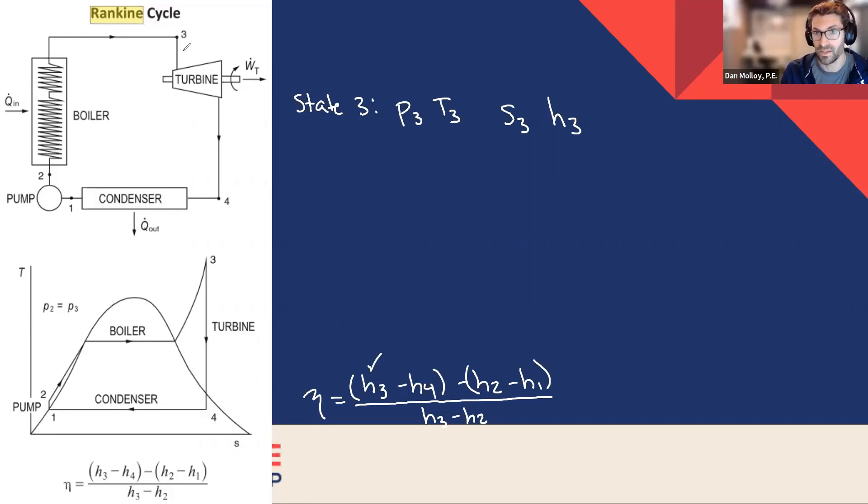Now, the next thing we want to know is H4. And if we want to know the maximum efficiency of the cycle, we can take the liberty of assuming that the turbine is as efficient as possible, which is to say that it has 100% isentropic efficiency, which is to say that the entropy at state four is equal to the entropy at state three. Well, why is that useful?